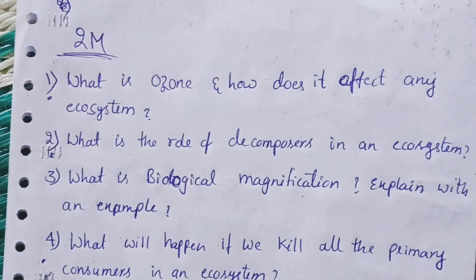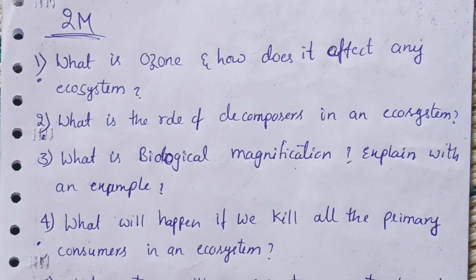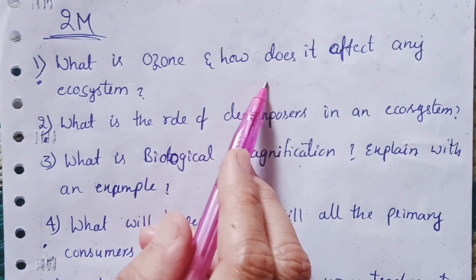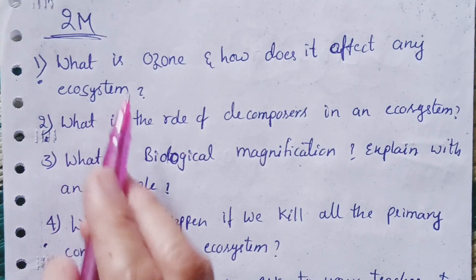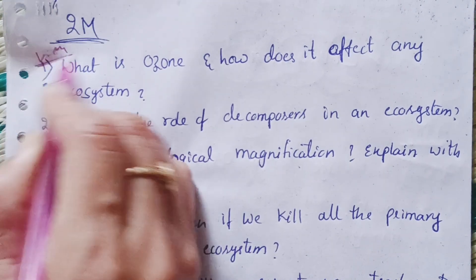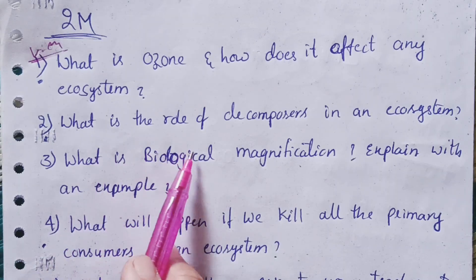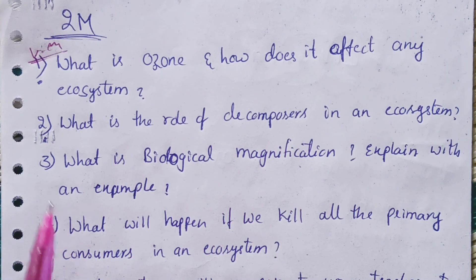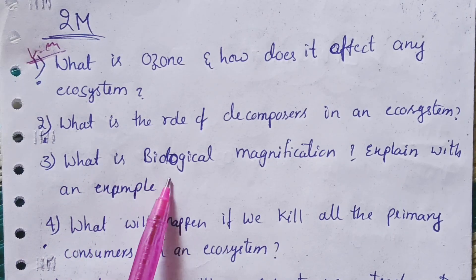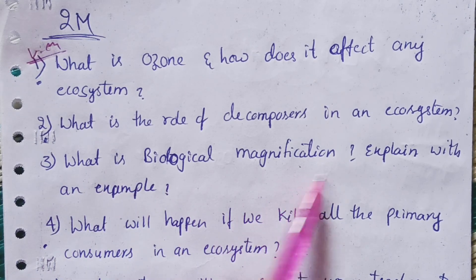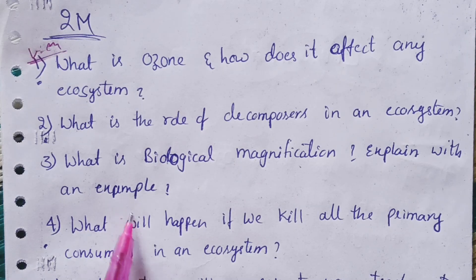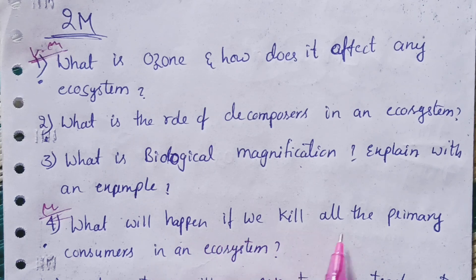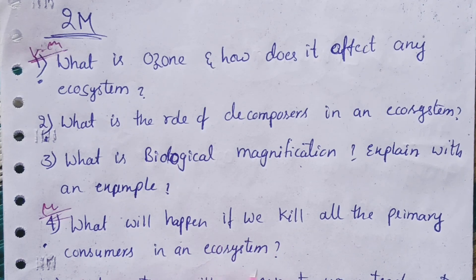Now the two-mark questions. The first important question is: What is ozone and how does it affect any ecosystem? The second is: What is the role of decomposers in an ecosystem? The third is: What is biological magnification — explain with an example. The fourth is: What will happen if we kill all the primary consumers in an ecosystem?